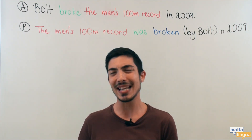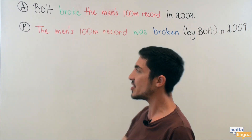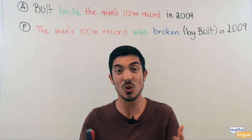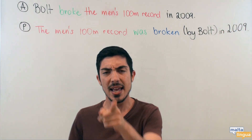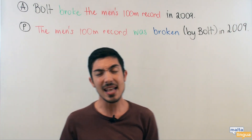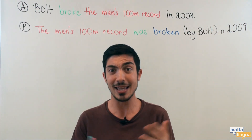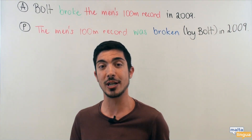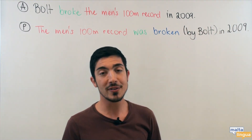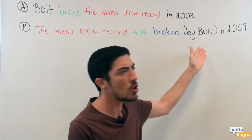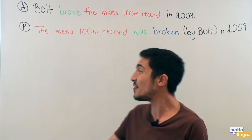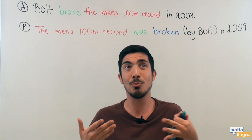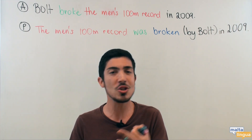A lot of you might be asking: why can't we just say 'Bolt broke the record in 2009'? There is nothing really wrong with that in all reality. So why do we use the passive? Sometimes Bolt is just not important. It doesn't matter that it was Bolt — it could be my father or your cousin, not Bolt, which is why I've put Bolt in brackets. What is important is the fact that the record was broken. This is a very important event, and therefore the person is not so important.